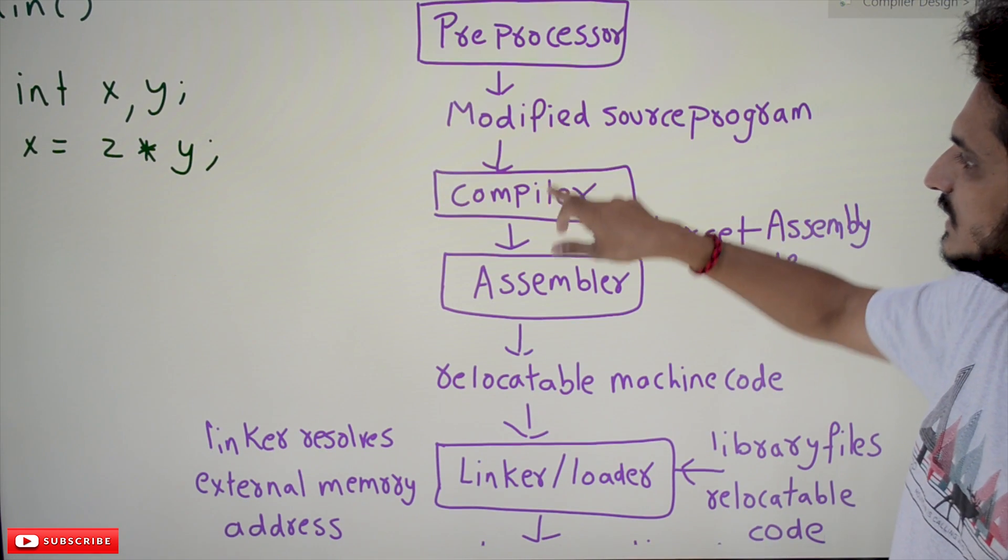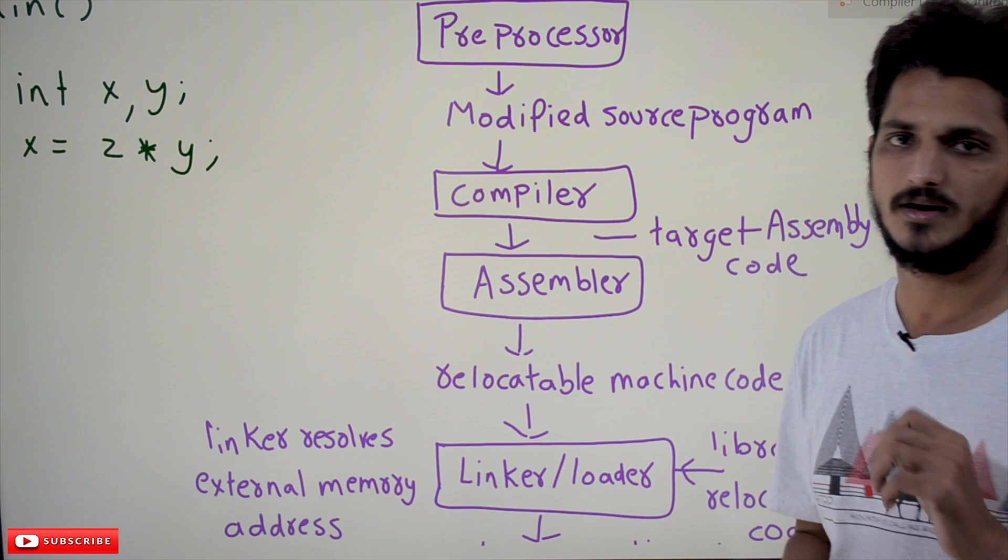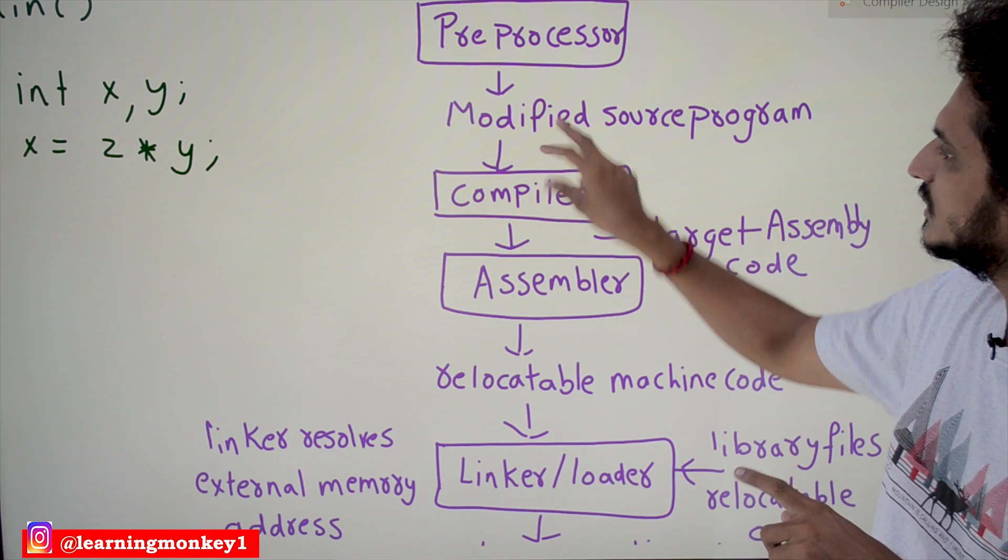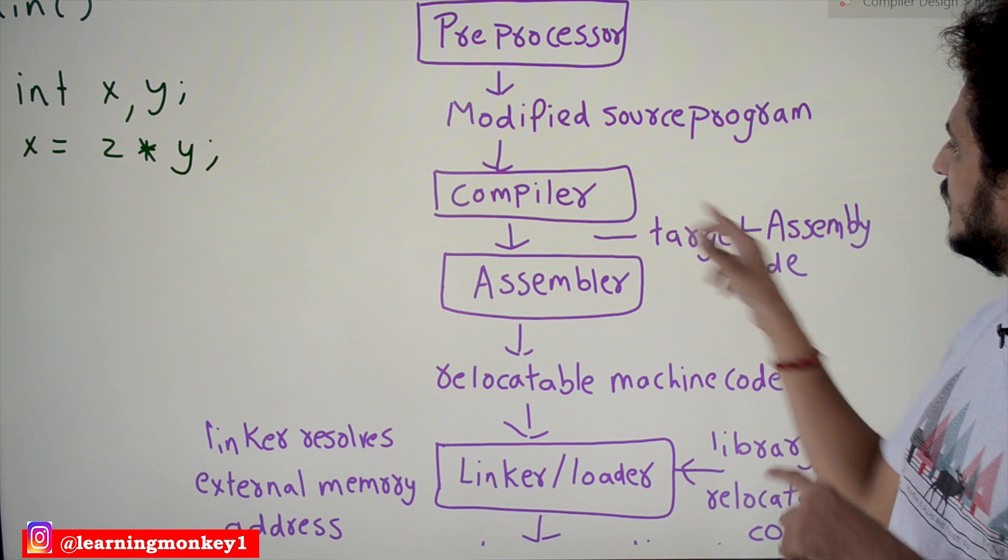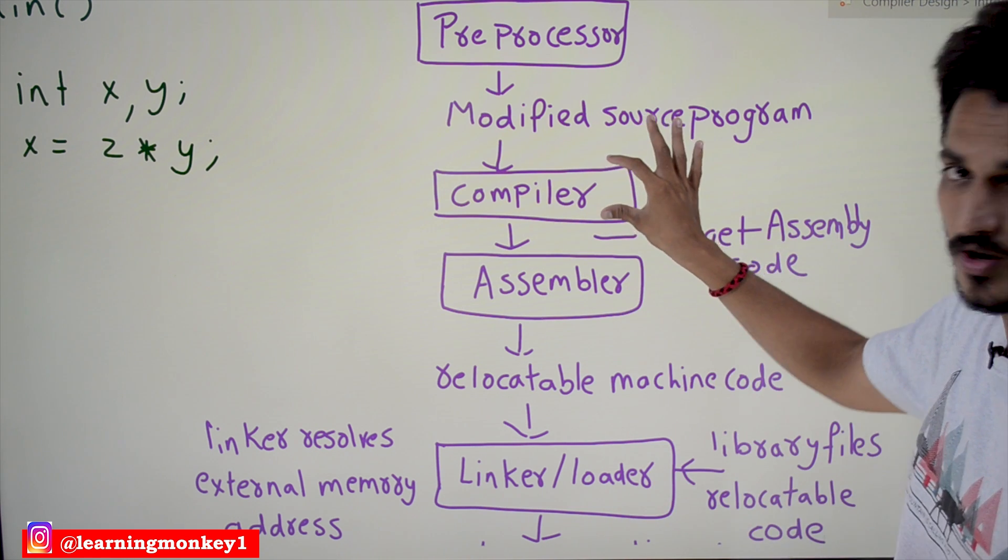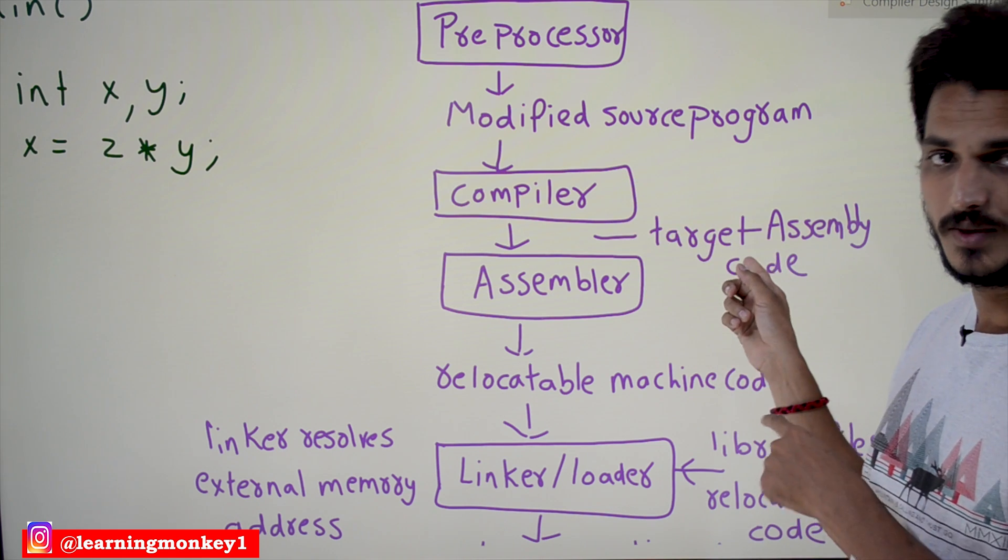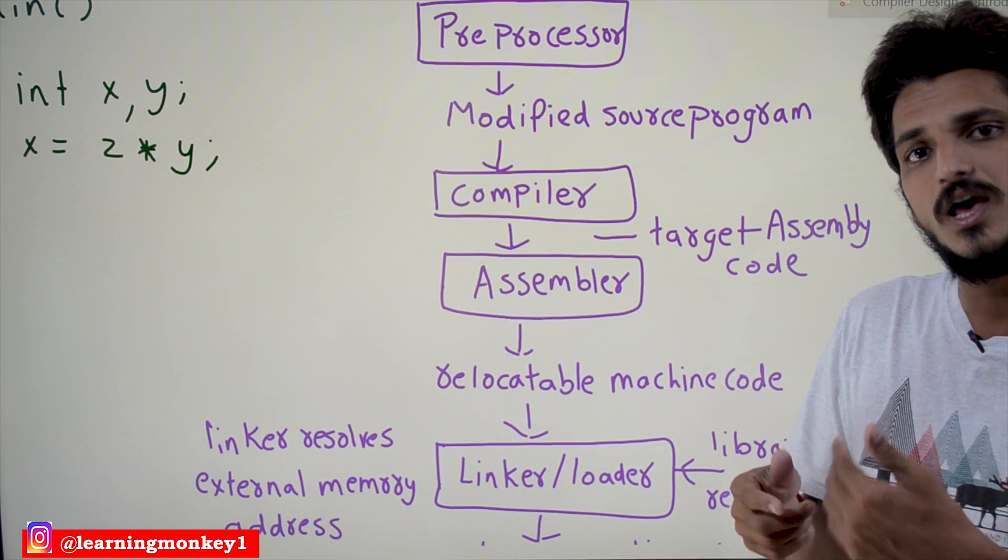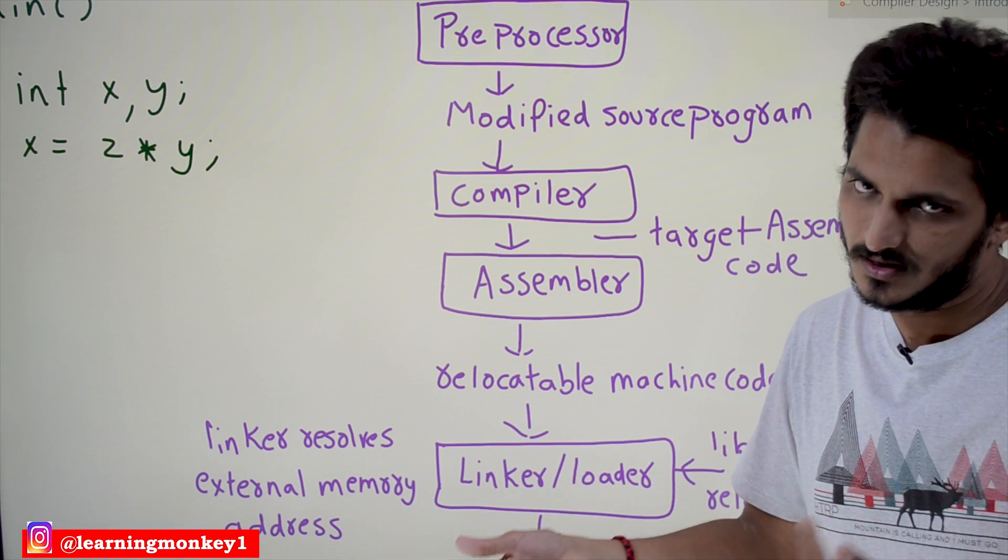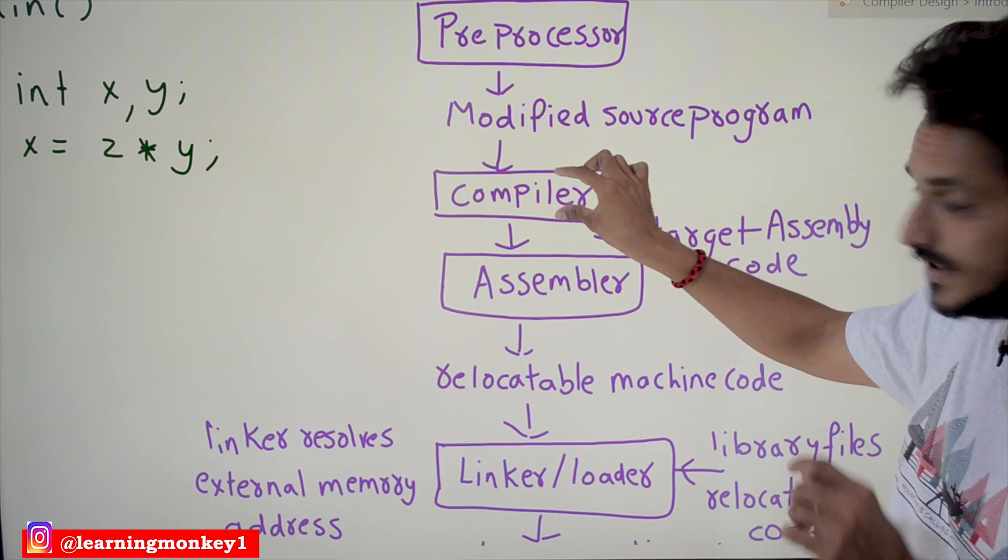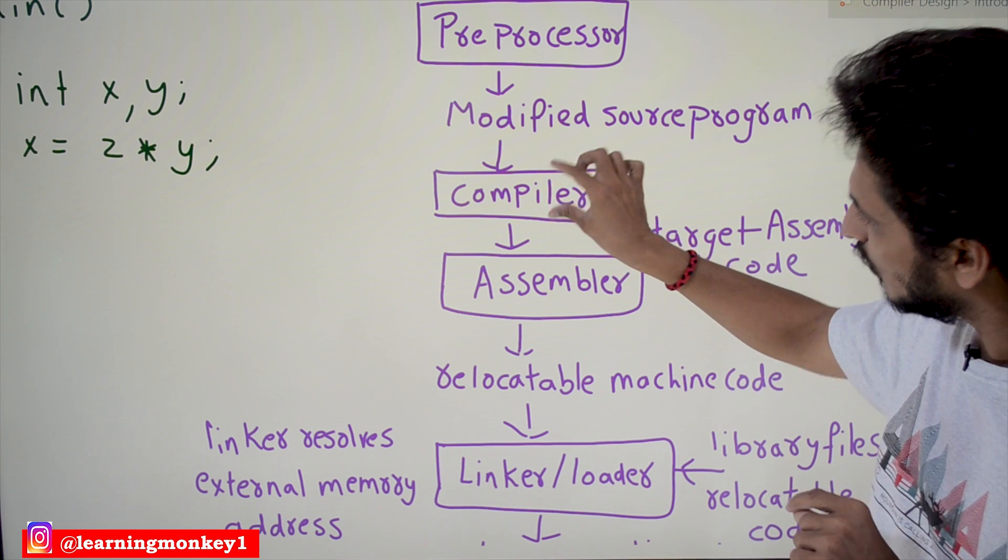This modified program is given as input to the compiler. Now it is the goal of compiler to convert this modified source program into target assembly code. How this will convert, how the assembly language code will come as output from the compiler - these discussions we will cover in our next coming classes. In detail we will go. In this subject we are going to explain only this part.